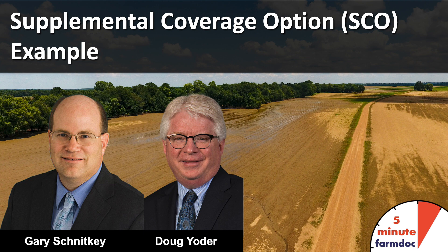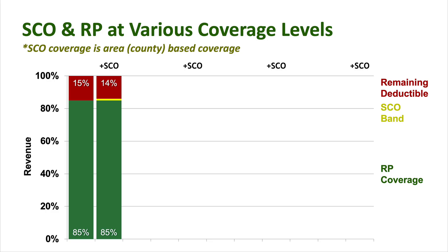Hello, this is Gary Schnitke and this is a 5-minute Farm Doc Daily. We're going to give you an example of SCO, which is available if you take PLC under the commodity title choice, and Doug Yoder is going to give that. Thank you Gary, I'd be more than glad to. SCO is a county level crop insurance option that crop insurance purchasers can consider purchasing if they first purchase a farm level coverage such as yield protection or revenue protection. SCO is extra county coverage they can add on top of their farm level coverage. This example combines SCO with revenue protection.